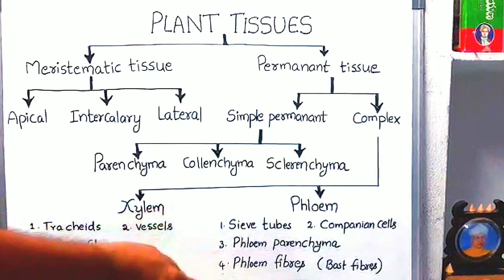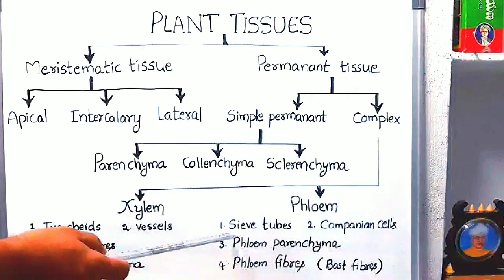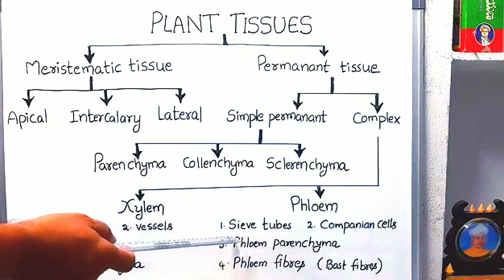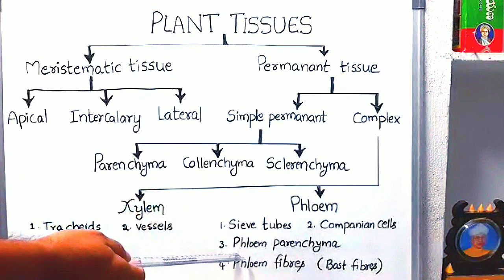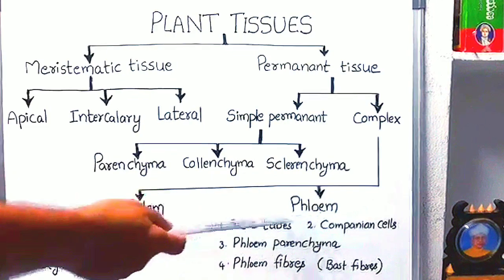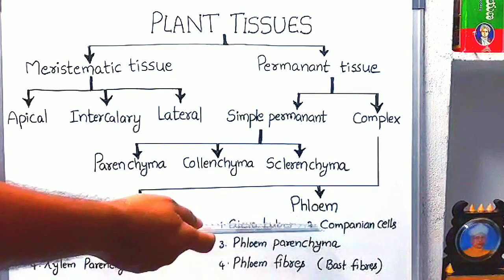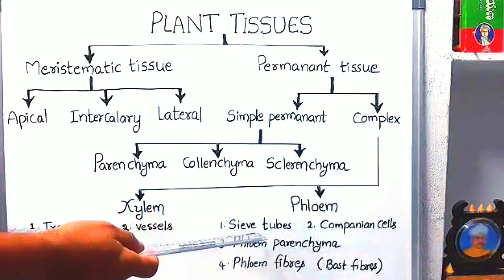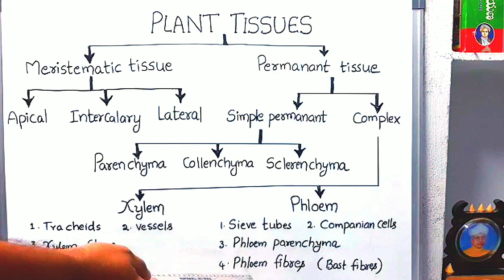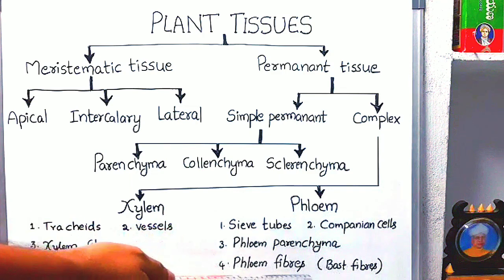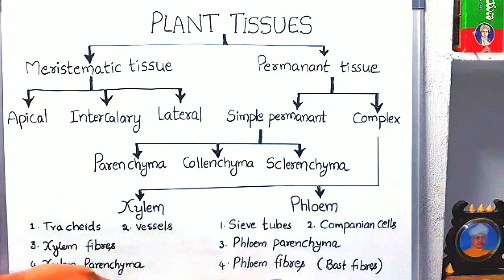Of the four phloem elements, the first three — sieve tubes, companion cells, and phloem parenchyma — are living tissues consisting of living cells. Whereas phloem fibers are dead tissues or dead cells. Phloem fibers are generally also called bast fibers.